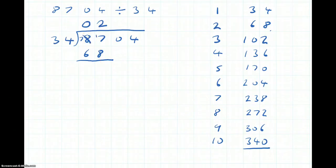17. 17 take away 8 is 9. 7 take away 6 is 1. Then we bring down the next number.